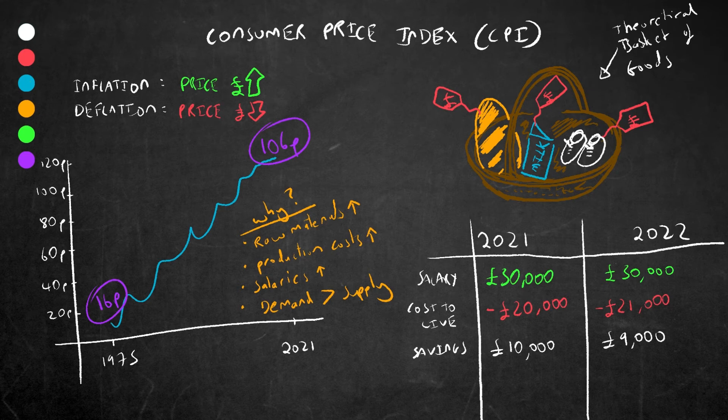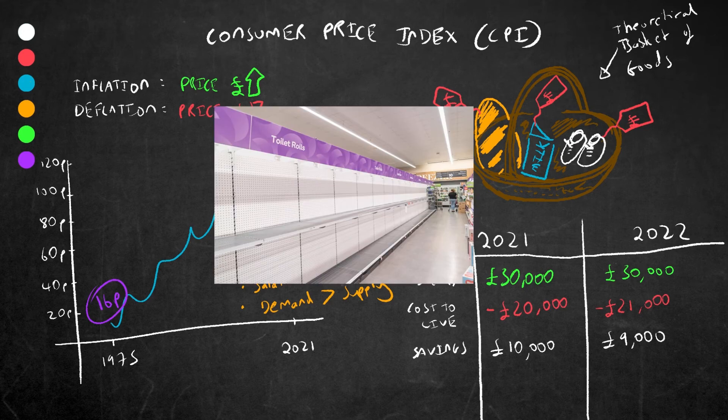So why is inflation so high at the moment? Well, there are a number of reasons, but it's mostly due to the global pandemic, energy price increases and the varying supply chain disruption, leading to less supply than demand as a whole, which puts upward pressure on the prices.